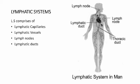The lymphatic system is a part of our immune system. It is the network of vessels through which lymph drains from the tissues into the blood. The lymphatic system comprises four parts: lymphatic capillaries, lymphatic vessels, lymph nodes, and lymphatic ducts.